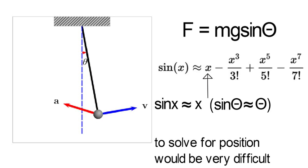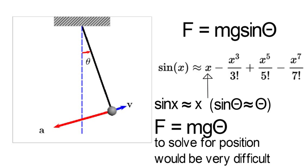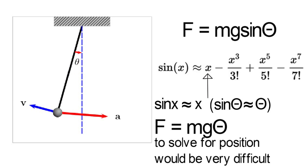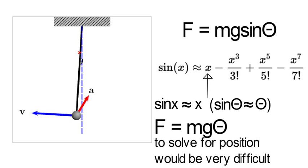So instead of mg sine theta, we can just approximate that with mg theta. This makes the problem way easier to solve and gives a close enough approximation assuming that theta remains small, as in the pendulum doesn't swing very high.